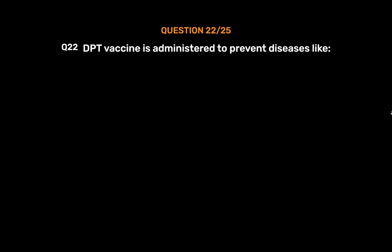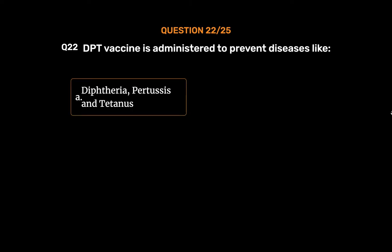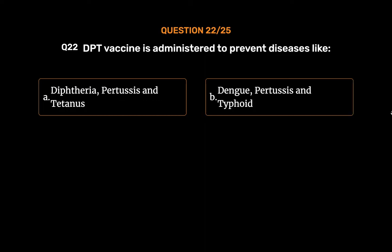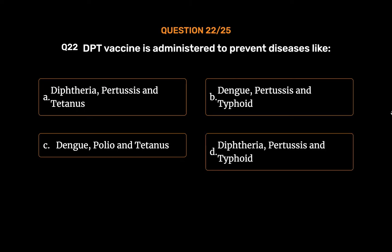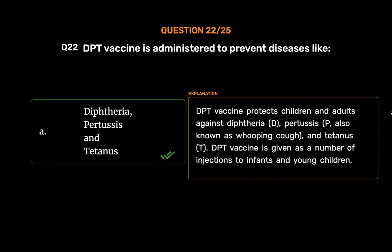Question No. 22. DPT vaccine is administered to prevent diseases like: Option A. Diphtheria, pertussis, and tetanus. Option B. Dengue, pertussis, and typhoid. Option C. Dengue, polio, and tetanus. Option D. Diphtheria, pertussis, and typhoid. The correct answer is Option A, Diphtheria, pertussis, and tetanus. DPT vaccine protects children and adults against diphtheria (D), pertussis (P), also known as whooping cough, and tetanus. DPT vaccine is given as a number of injections to infants and young children.